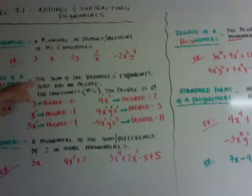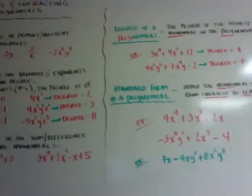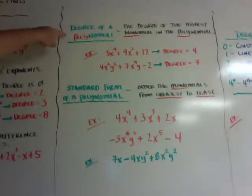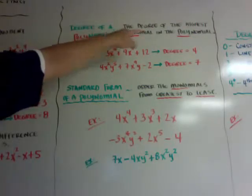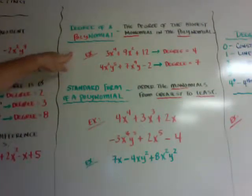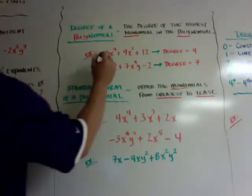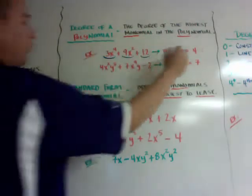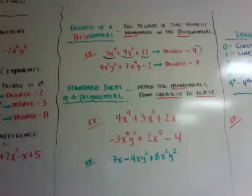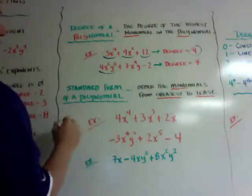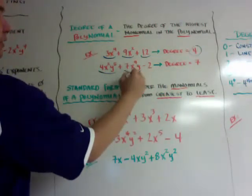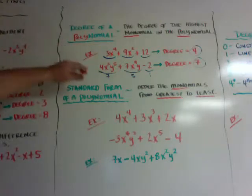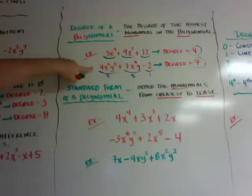The degree of a monomial is the sum of the variable's exponents. The degree of a polynomial is a little different — it's the degree of the highest monomial within that polynomial. So if you look at this polynomial, the degree of this monomial is four, this one is two, and this one is one — so the largest is four, and the degree is four. In this next polynomial, the degree of this term is seven (because 2 plus 5), this term is five (4 plus 1), and this one is just one. So the degree of this polynomial is seven.